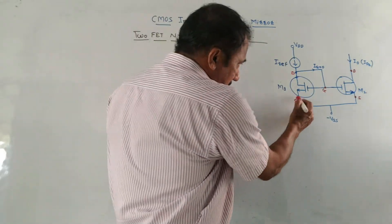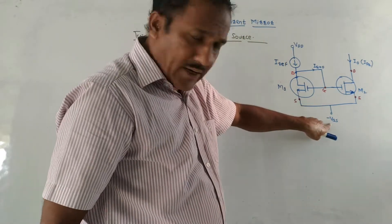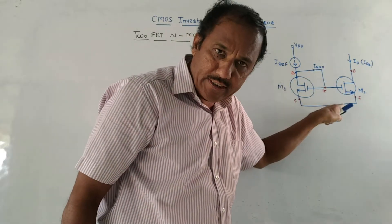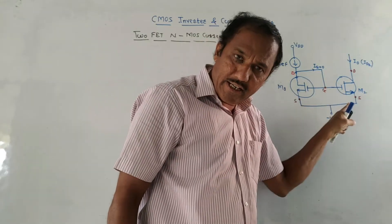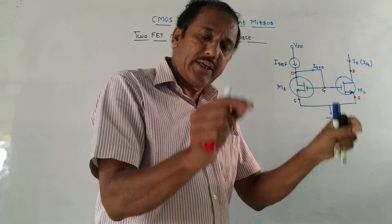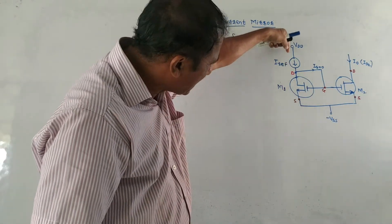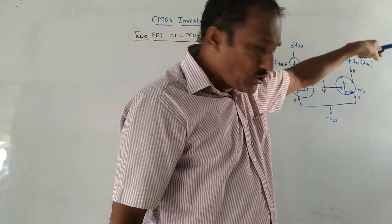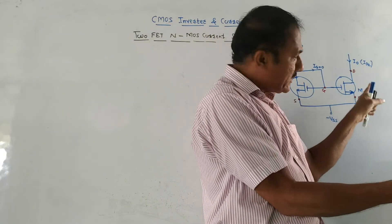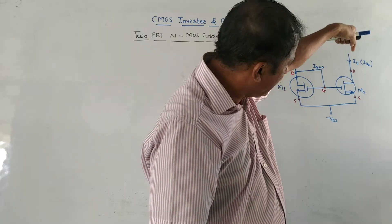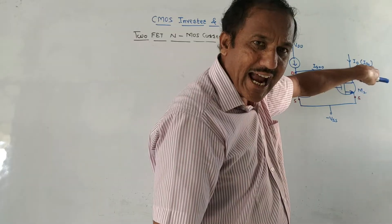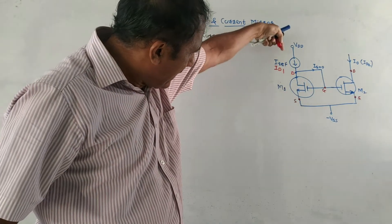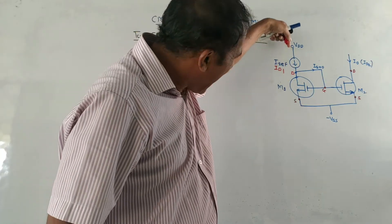The source terminal is common for both MOSFETs, connected to minus VSS. For MOSFET M1, the drain and gate terminals are connected together, and we assume gate current is zero. Since drain and gate are connected, MOSFET M1 is operating in saturation mode. The reference current I_reference is the same as ID1, the drain current flowing through the drain terminal of M1.